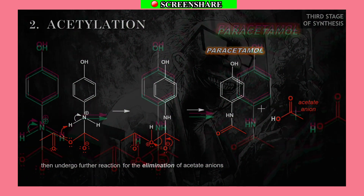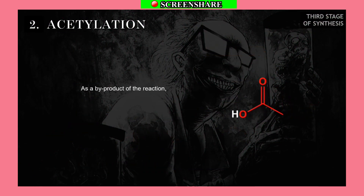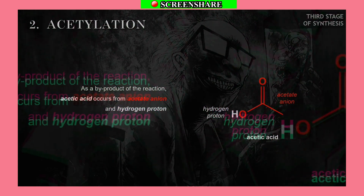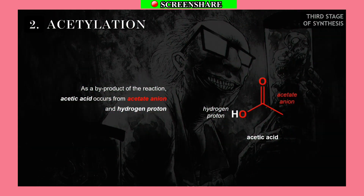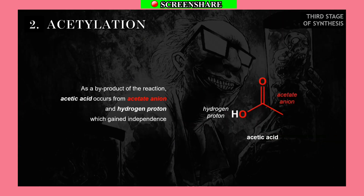An intermediate compound forms and then undergoes further reaction — the elimination of the acetate ion as a byproduct. Acetic acid forms from the acetate ion and a hydrogen proton, which gains independence.